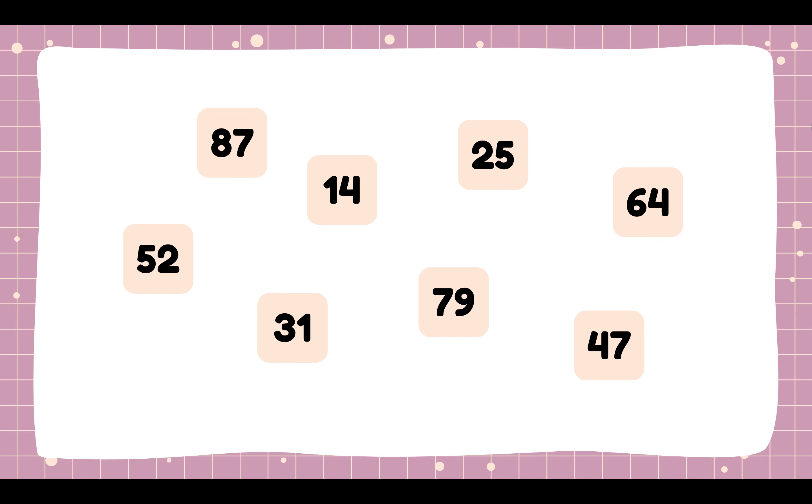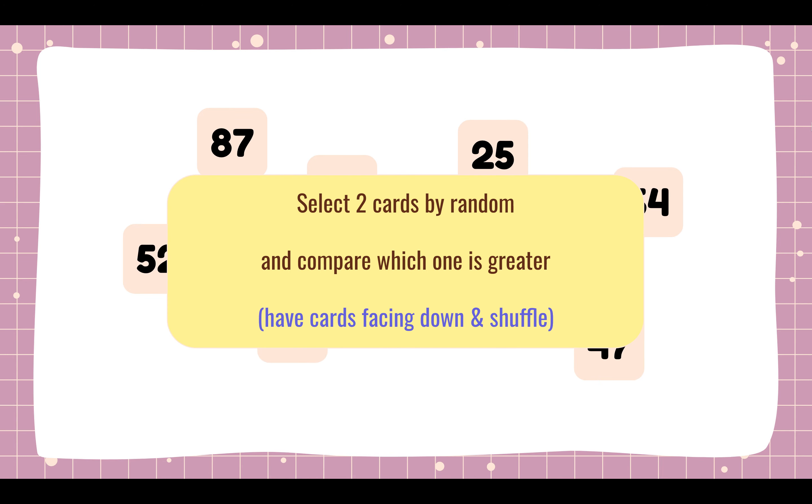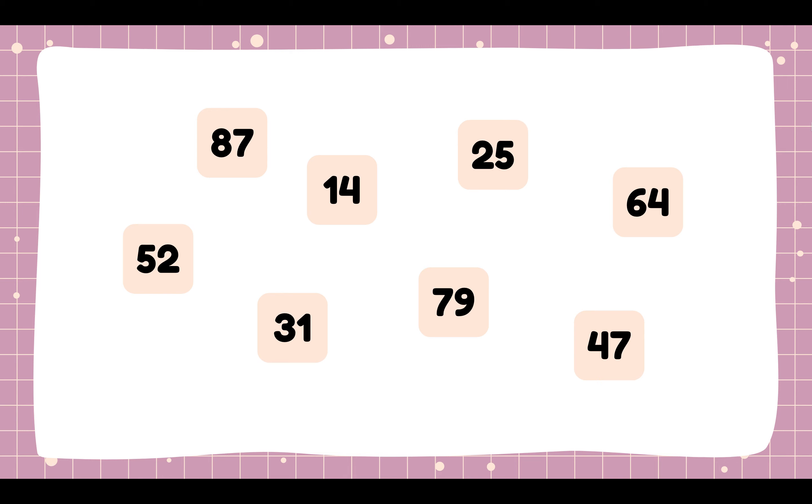Here you can see I have some cards. We're going to select two cards at random and compare them to see which one is greater. That means one card for you and one card for your partner. Make sure to have the cards facing down so we don't see what the numbers are, and then we're going to shuffle, which means we're going to mix them up. Turn them facing down so we don't see them, then mix them up.